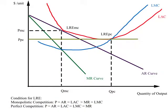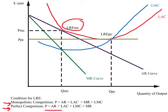In this diagram we compare the outcomes under monopolistic competition with those under perfect competition. Based on the equilibrium condition for monopolistic competition in the long run, we have already established the long-run equilibrium point for a monopolistically competitive firm. For perfect competition, you may recall from that earlier video: all relevant variables — price, average revenue, marginal revenue, and marginal cost — are equal to one another, and long-run equilibrium is at the minimum of long-run average cost.